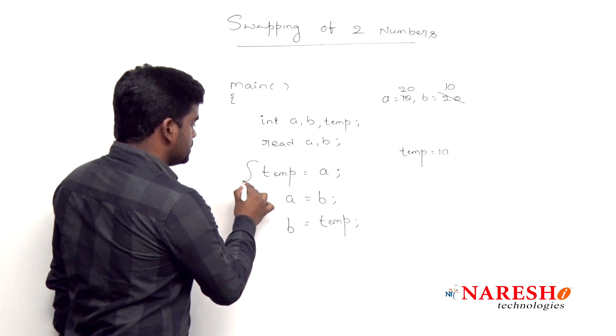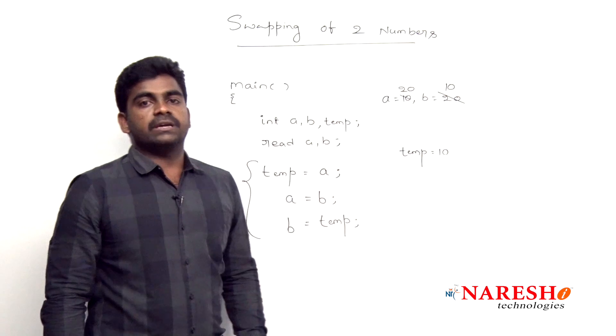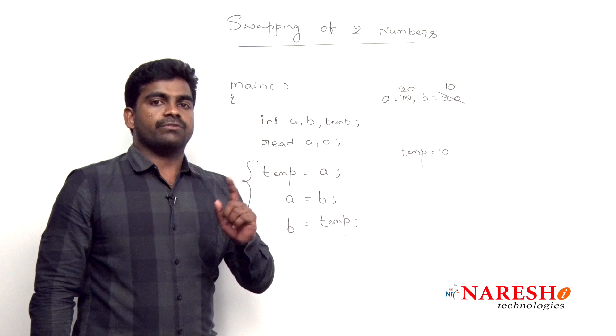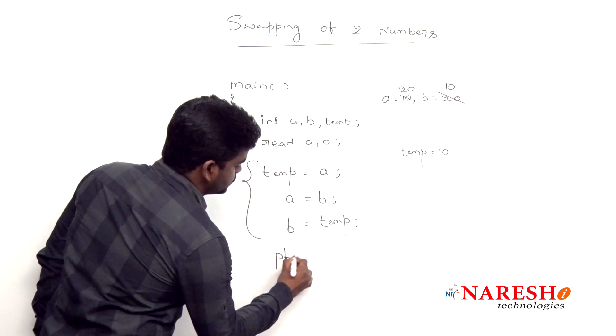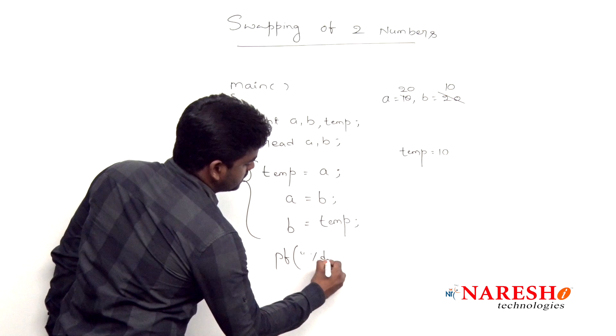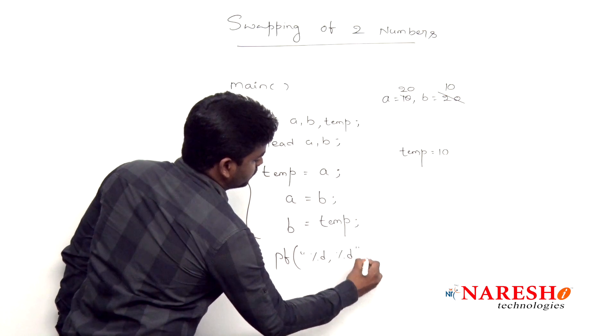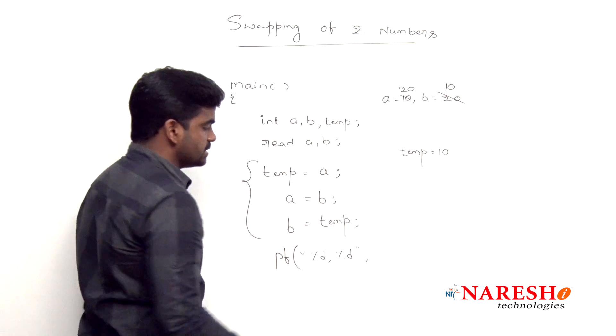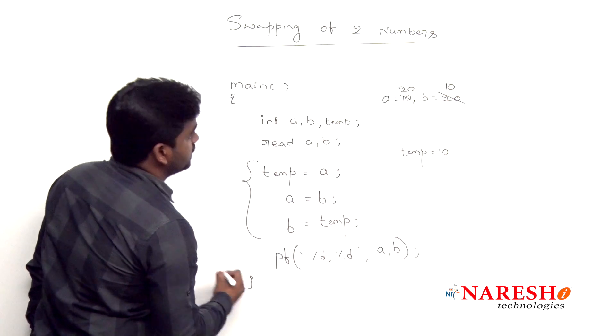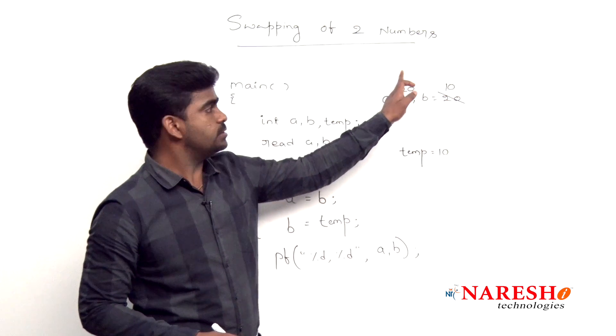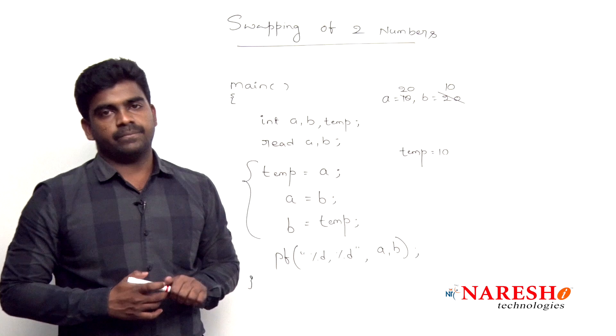And using these three steps, we can swap both the values of a and b. So finally, if you want to display, just use printf with the syntax of C with the two format specifiers. We can display a value and b value. Instead of 10 and 20, you will get the values 20 and 10. Thank you.